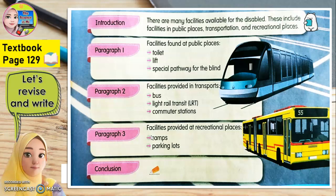For paragraph 3, the information given: facilities provided at recreational places — ramps and parking lots. Untuk perenggan ketiga, kemudahan yang disediakan di kawasan-kawasan rekreasi. Ramps — do you know what ramps are? I will explain to you later. Parking lots — kawasan meletak kenderaan.